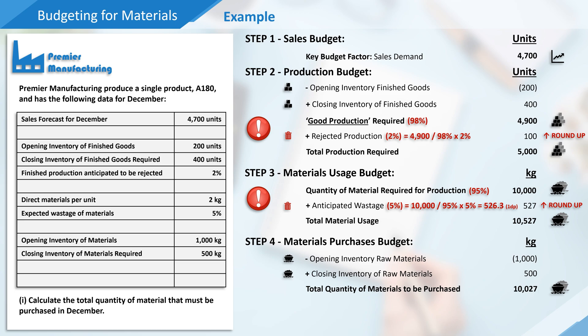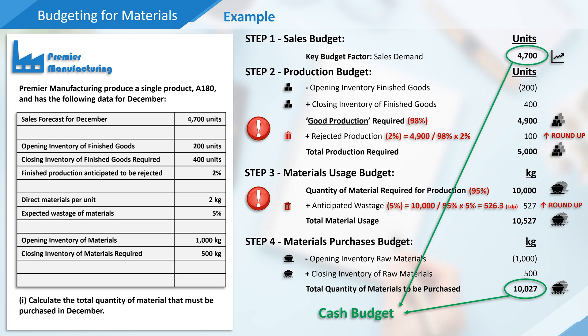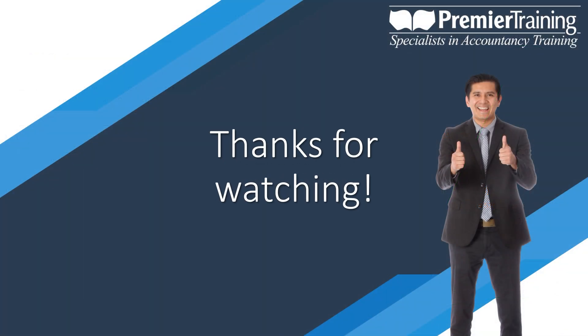By applying the standard purchase price per kilogram we can determine the total cost of materials required for December — essential for the cash budget. Also essential to the cash budget is the sales forecast figure, and by applying a selling price per unit to our initial sales forecast we can also derive the total expected revenue for the period. I hope you found this video helpful and thanks for watching.